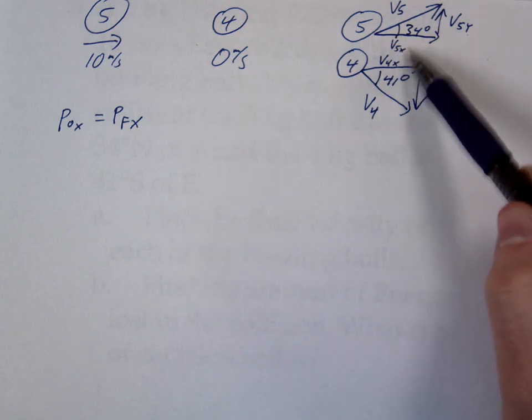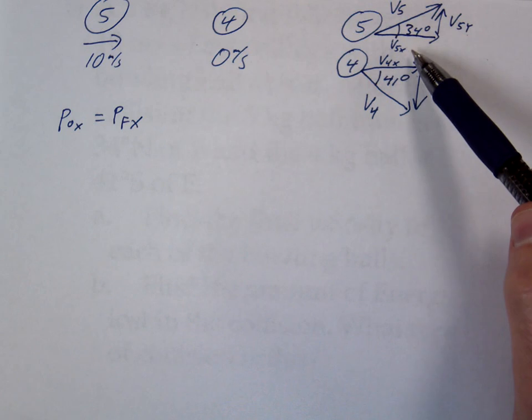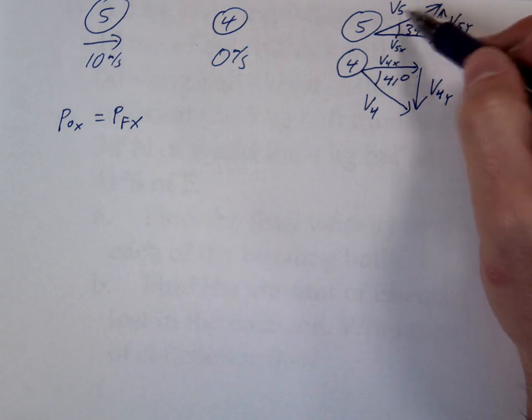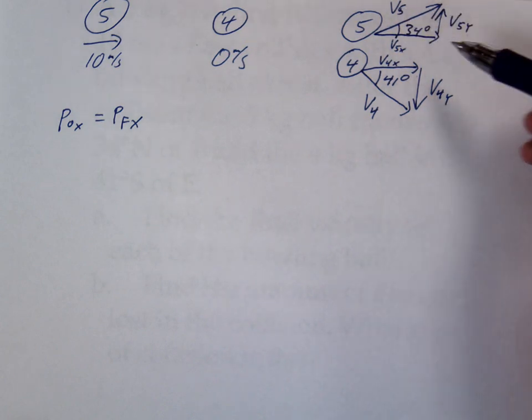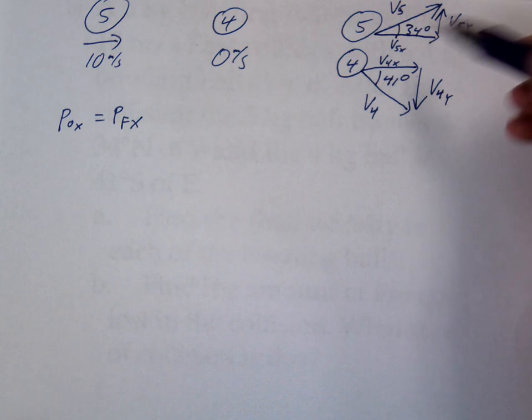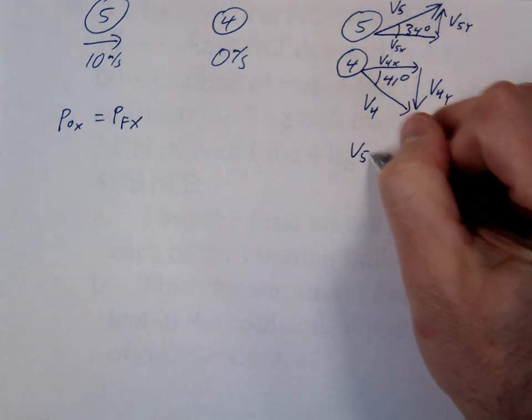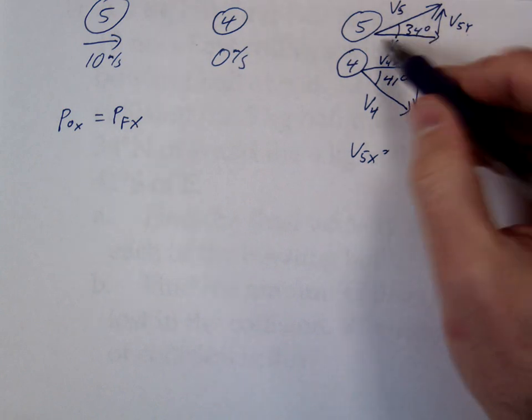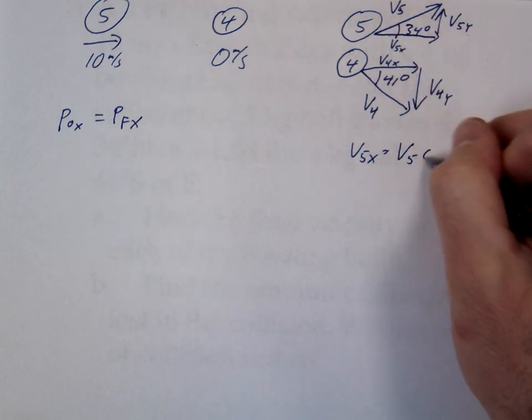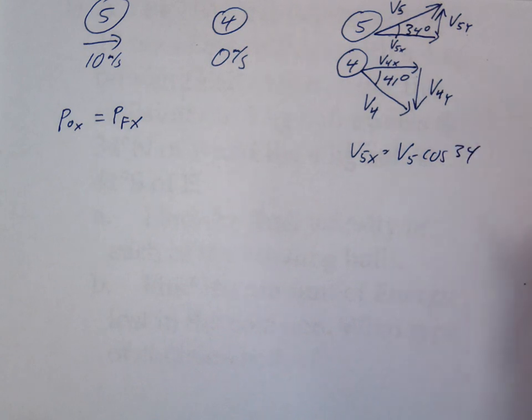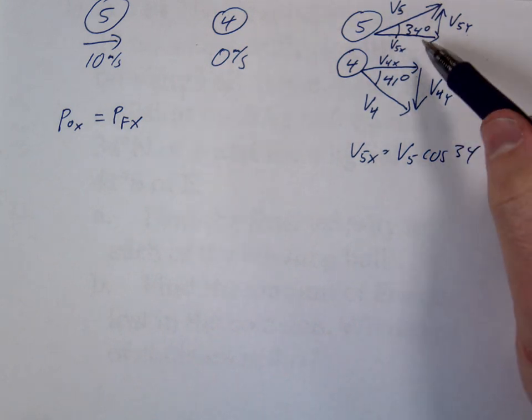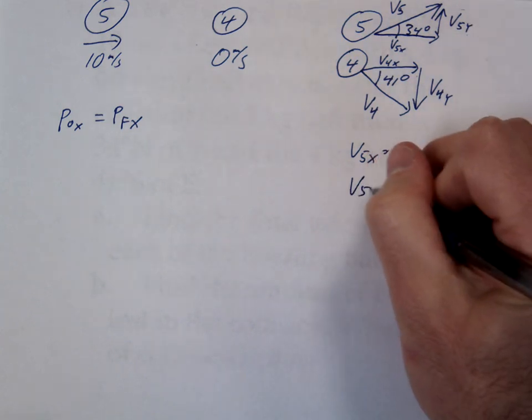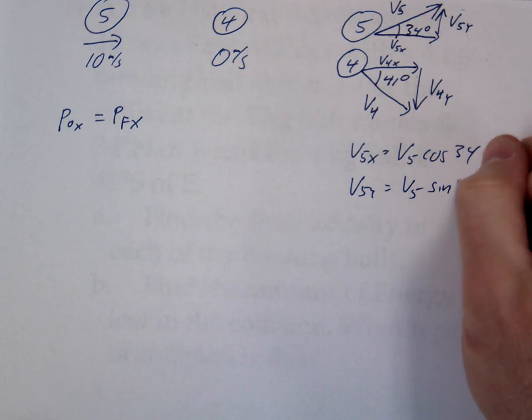So even though we don't know V5x, we know a little bit about V5x. What's an expression we can write for V5x? V5 cosine of 34. Right. So for V5x, I'm kind of out of space here. I'm just going to write it here. So V5x, this is the adjacent side. We could write that as V5 cosine of 34. And so hopefully at this point, you can see, we can do the same with V5y. We can write V5y is V5 sine of 34.